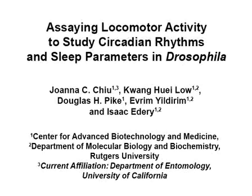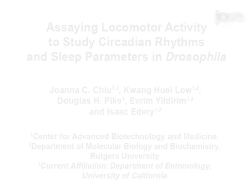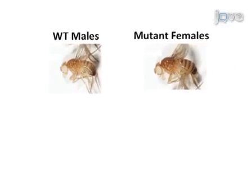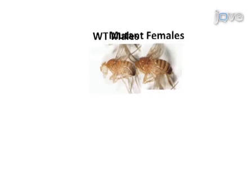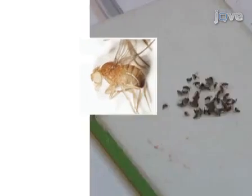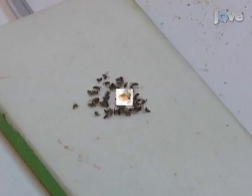The overall goal of the following experiment is to characterize circadian and sleep phenotypes in Drosophila by assaying daily rhythms of locomotor activity. This is achieved by generating transgenic flies, obtaining specific mutants, or setting up necessary crosses to prepare experimental animals.